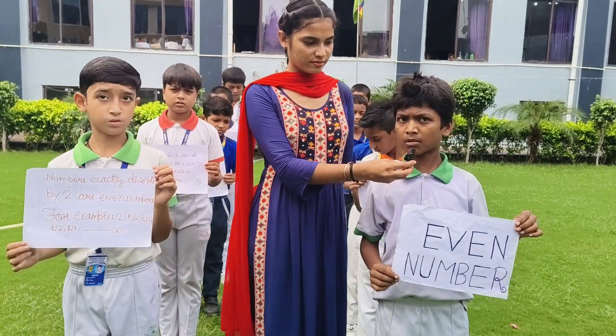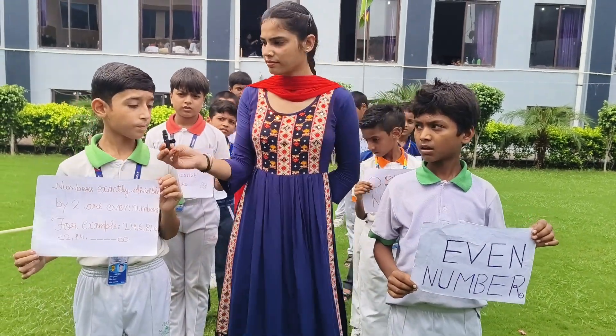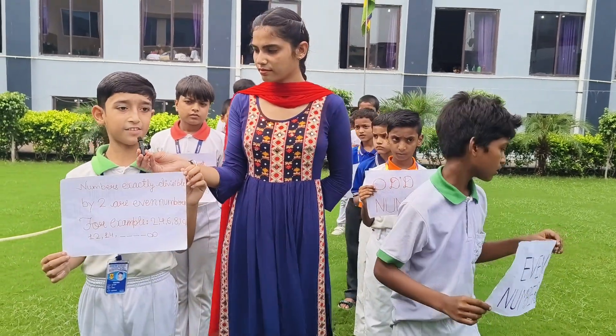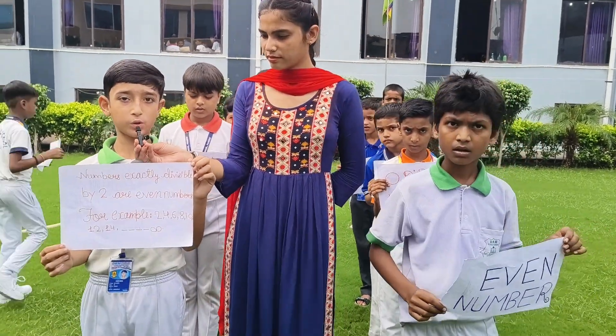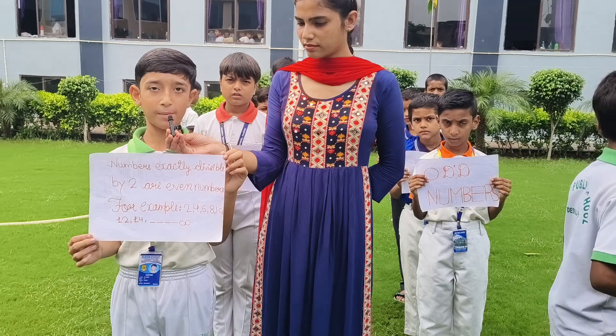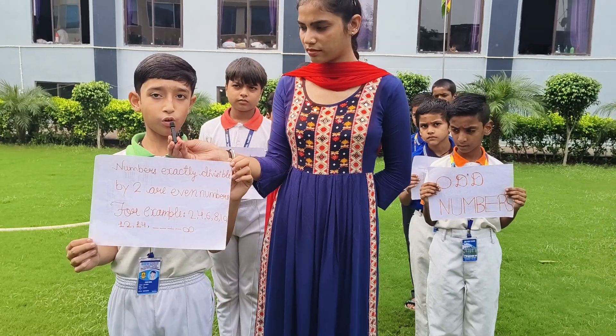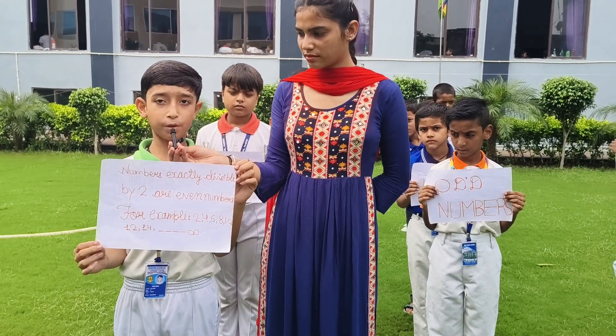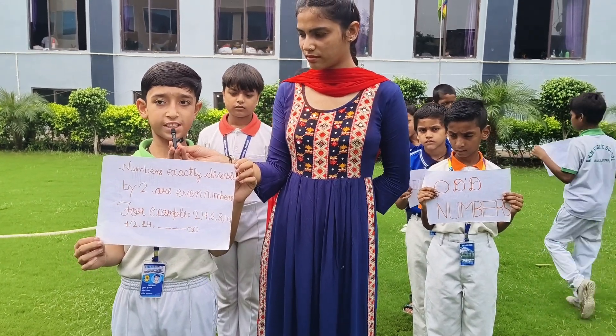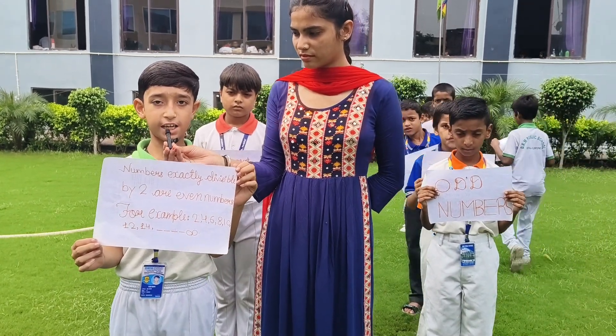Third is even number. Numbers exactly divisible by 2 are even numbers. For example, 2, 4, 6, 8, etc.